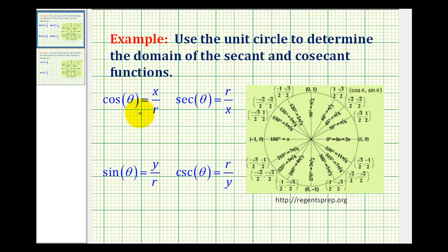cosine theta can be defined by x divided by r where r would be the radius of the circle and x would be the x coordinate of the point where the terminal side intersects the circle. And sine theta can be defined by y divided by r.